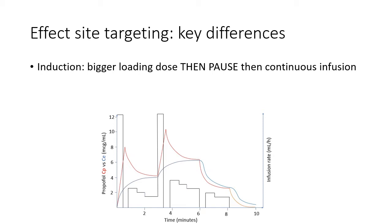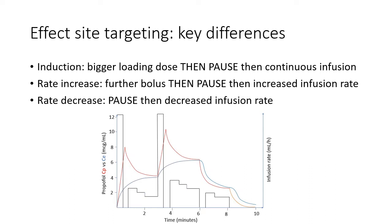If we demand that the machine increase the concentration, it will administer another bolus, then pause, then resume with a higher infusion rate than before. The reason for this is that the machine will overshoot the plasma concentration in order that the effect site concentration be reached sooner. If we demand that the machine decrease the concentration, it will pause, and for a longer period of time than in plasma targeting mode, because we allow undershoot, then resume at a slower infusion rate.